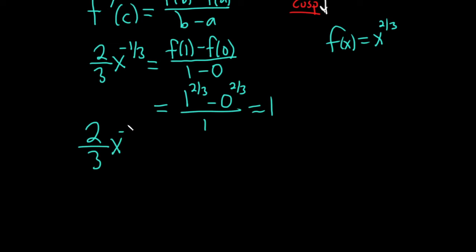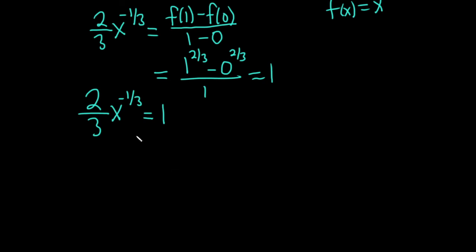So we have two thirds x to the negative one third is equal to one. We have to solve this. Maybe let's bring this guy downstairs and make it positive. So this is two thirds times one over x to the one third equals one.